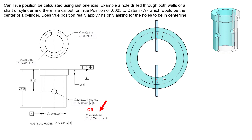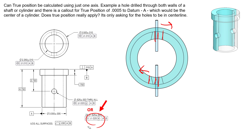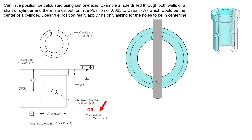Each hole would have its own reported position deviation. There is still a coaxiality control between the two: because it's a pattern of features with simultaneous requirements, neither axis can deviate more than 0.020 from the other. So they are controlled relative to each other in both location and orientation — but no longer do we have a single axis representing both holes. If we brought back the 0.622 pin, we are no longer guaranteeing that pin passes through both holes simultaneously.